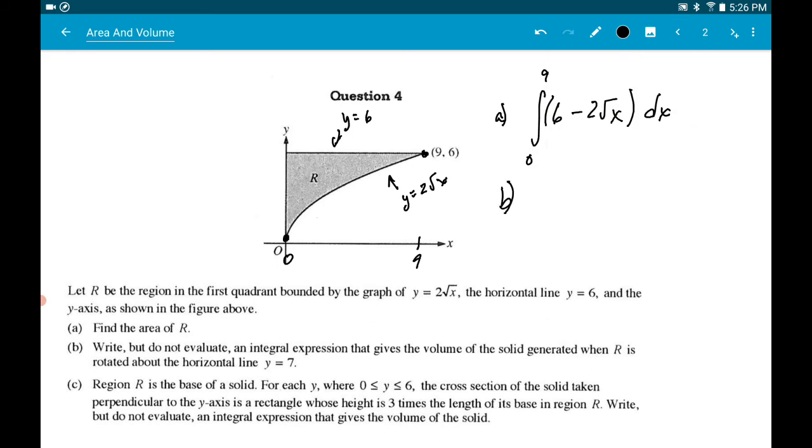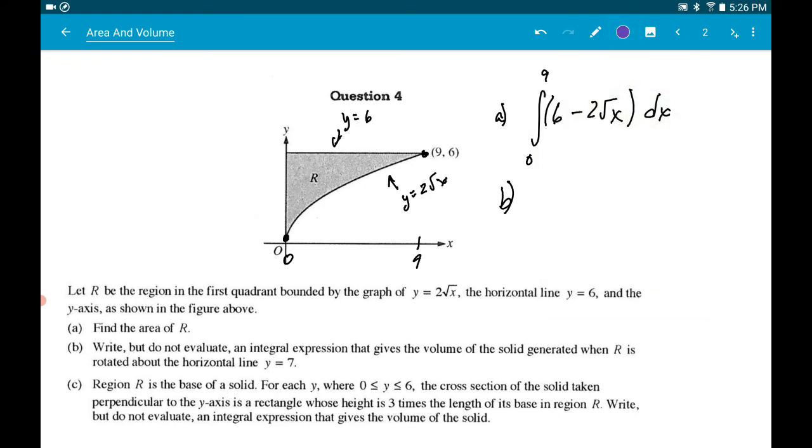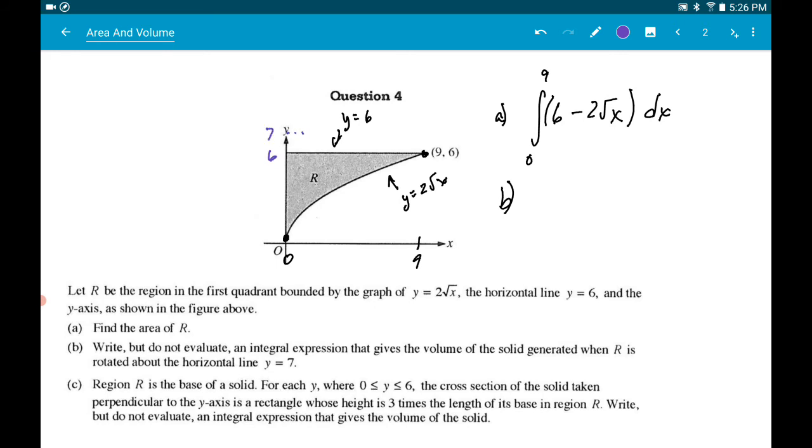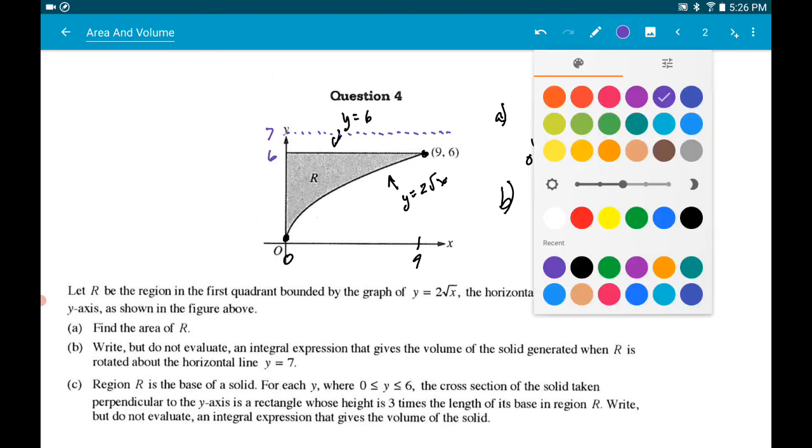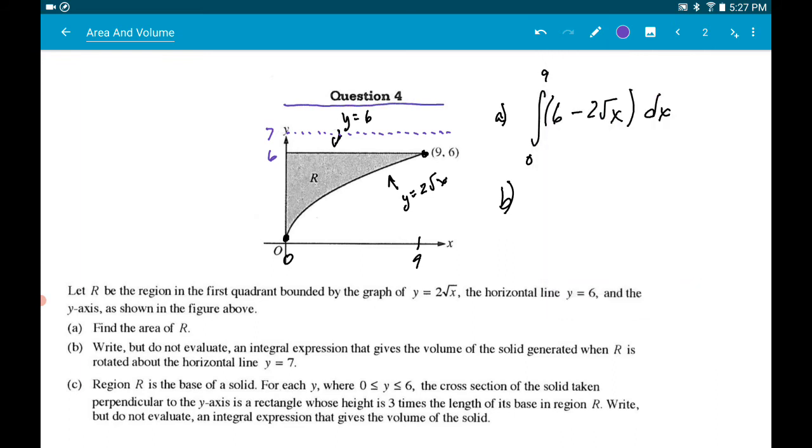Alright. Let's move on to letter B. Write but do not evaluate an integral expression that gives the volume of the solid generated when R is rotated around the line y equals 7. Alright. So remember, this is 6 right here, so 7 will be up here. So I'm going to try to rotate it around this line. So I'll start with an attempt to drawing, but that is my rotation of the line y equals 6. And then what's going to happen is you're going to have this shaded region here. So think of this as kind of like a funnel with a cylinder missing in the middle. You've got that hole.